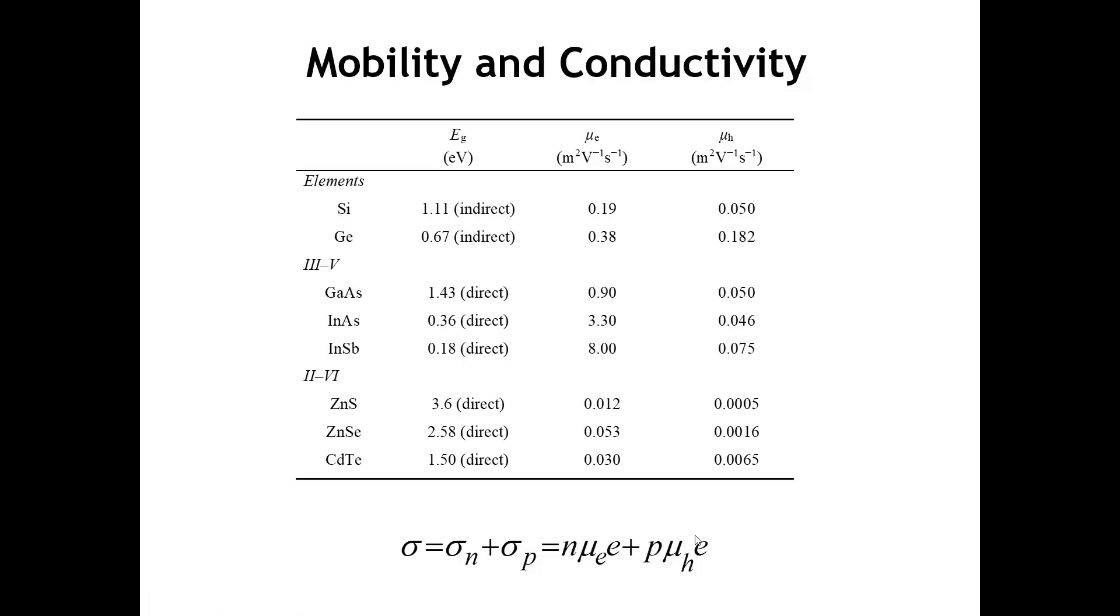Now, most semiconductors are intentionally doped one way or the other. In most cases, really going to be dealing with only one or the other of these, depending on if we've acceptor-doped or donor-doped the semiconductor. Here are mobility values for some common semiconductors. And just a couple things to note. We get quite high mobility values for the 3-5 semiconductors, considerably higher than for either the elemental semiconductors or the 2-6 semiconductors. And the other thing to note is, as a general rule, the mobilities of the electrons are higher than the mobilities of the holes.